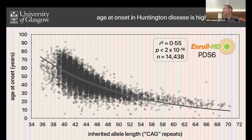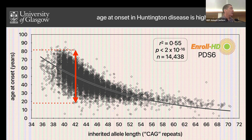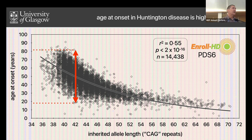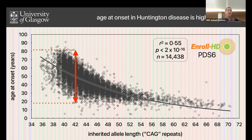The number of repeats is a major modifier of disease severity. Nonetheless, the phenotype is still highly modifiable. Looking at individuals with 42 repeats, the average age of onset is around 50. But some individuals get symptoms at age 20, and others not until their 70s and 80s, even though they've inherited the same number of repeats. This tells us that the phenotype is not written in stone. Some of that will be environmental modifiers, but a large part is also expected to be genetic in nature.